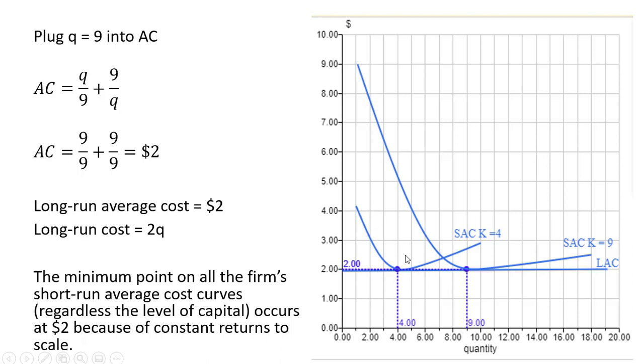And now a graph of both of those short-run average cost curves at different levels of capital. The minimum point is always at a per-unit cost of $2. That's it.